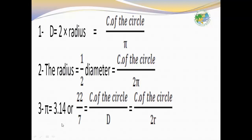Pi equals 3.14 or 22 over 7. Pi also equals the circumference of the circle over the diameter.